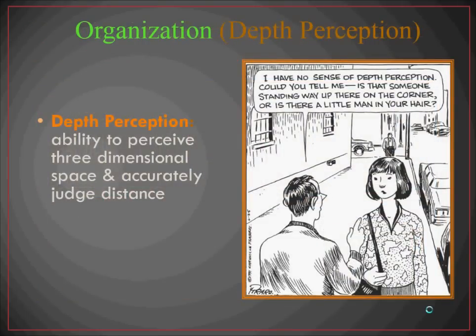Depth perception is another piece of organization — our ability to perceive three-dimensional space and accurately judge distance. In this comic, the man asks the woman, 'I have no sense of depth perception. Can you tell me, is that someone standing way up there on the corner, or is there a little man in your hair?' We see this in comics and two-dimensional art: if you want to draw somebody who is much further away, you have to draw them very small and give cues as to depth and distance by having lines converge to a similar point in the background.